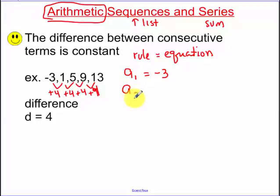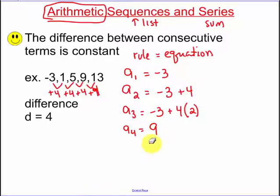To get to my second term, we took our initial term, our first term, and we added 4 to it. To get to our third term, which was 5, we took our initial term, negative 3, and we added 4 twice. So we added 4 two times. Our fourth term, which is 9, we took the negative 3 and we added 4 to it 1, 2, 3 times.